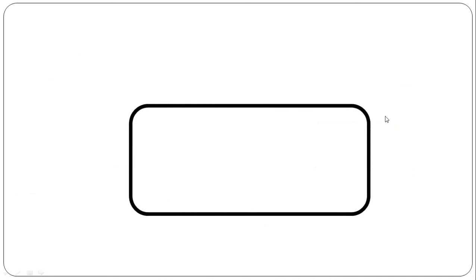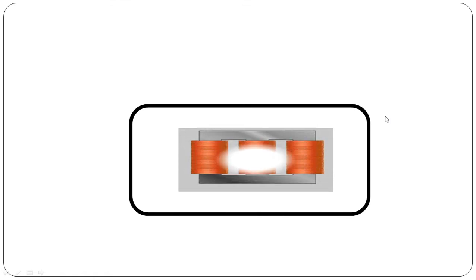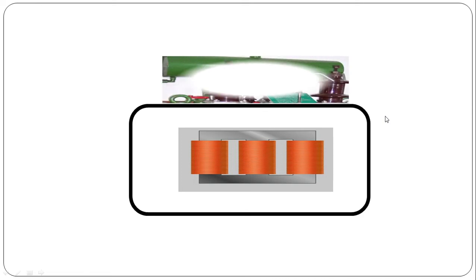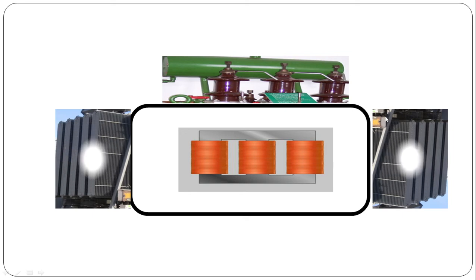Now I tell you how radiator performs the cooling function in transformer. See, this is transformer tank and it is filled with transformer oil. Core and winding are immersed inside this transformer oil. This is conservator and these are the radiators. These radiators are connected to the tank of transformer using two valves.